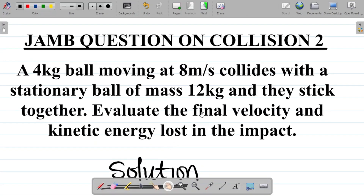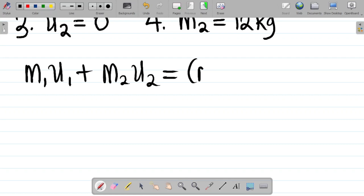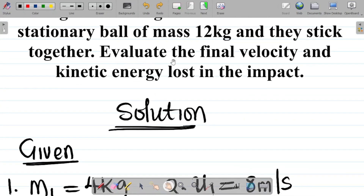What we have here is actually an inelastic collision. We've extensively discussed the concept of collision in a previous class — I'll leave the link in the video description or pinned comment. An inelastic collision happens when two bodies stick together and move with a common velocity after collision. The formula is: m1·u1 + m2·u2 = (m1 + m2)·v, where v is the common final velocity.